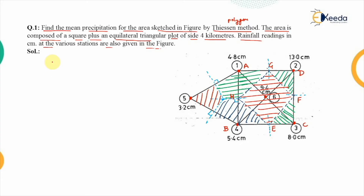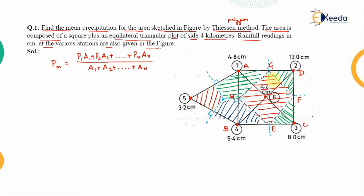According to the Thiessen polygon method, average rainfall is given by: P̄ = (P1·A1 + P2·A2 + ... + Pn·An) / (A1 + A2 + ... + An). We have six stations with known precipitation values P1 through P6. What we need to calculate are the respective areas A1 through A6, which are currently unknown.